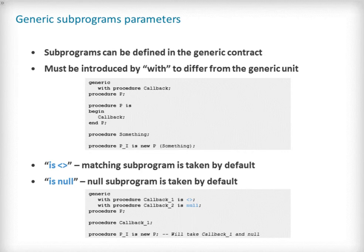Our final look at generic parameter types brings us to how subprograms can be used. A generic subprogram parameter must be defined in the generic contract and prefixed using the with reserved word. This is to ensure it is not confused with the generic unit name itself in case it is a generic subprogram unit like a function or procedure. Here we see an example of this with a generic procedure P that has a procedure called callback in its contract. The body of P may make calls to callback to complete its function.